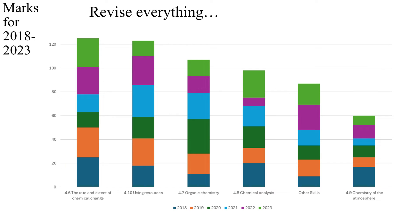The first thing I ought to say is that you really should try to revise everything you have time to revise, because what I've done is look at the past and try to anticipate the future. This offers no guarantees about what will happen for 2024. But what we can see from this graph is that there are some topics that are allocated more marks than others.